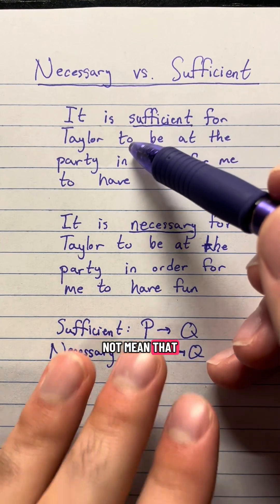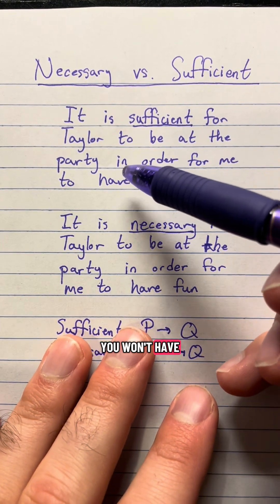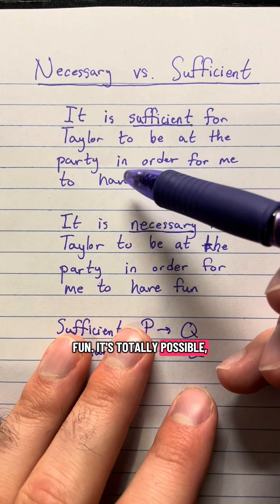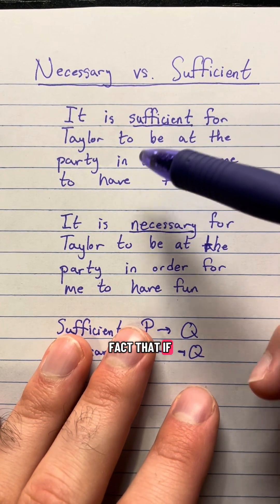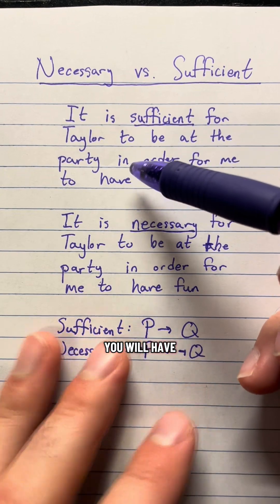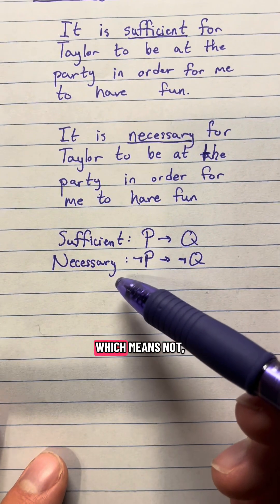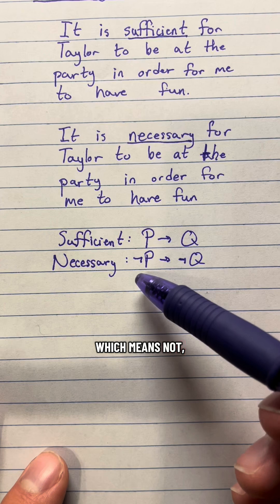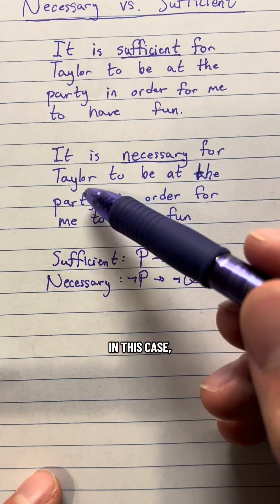However, this does not mean that if Taylor is not at the party, you won't have fun. It's totally possible, but you just know for a fact that if they are there at that party, you will have fun. Compared to necessary, which means not P implies not Q, which is the other way around.